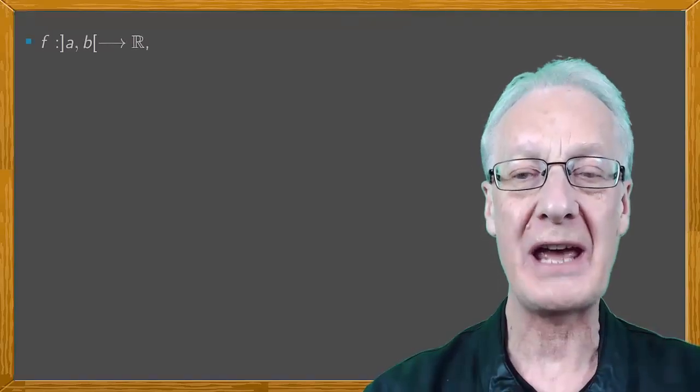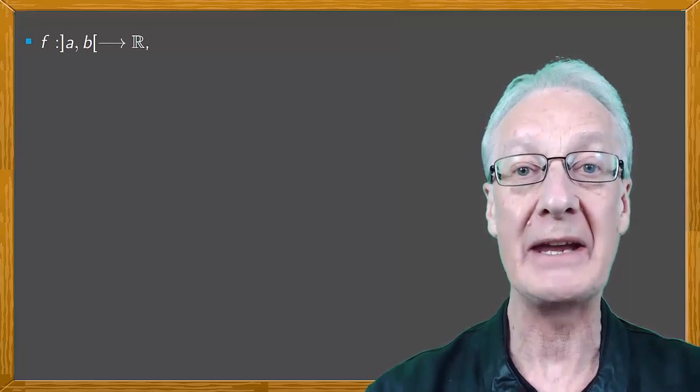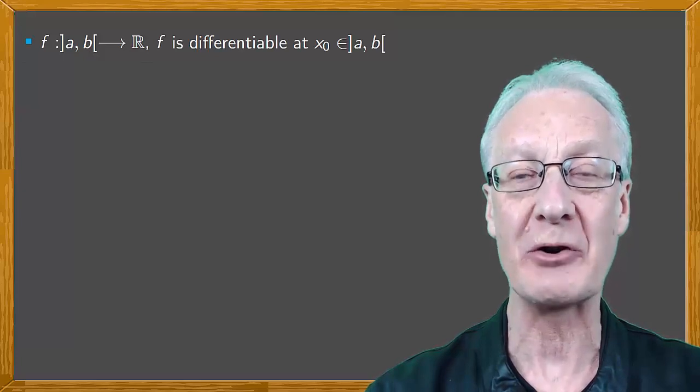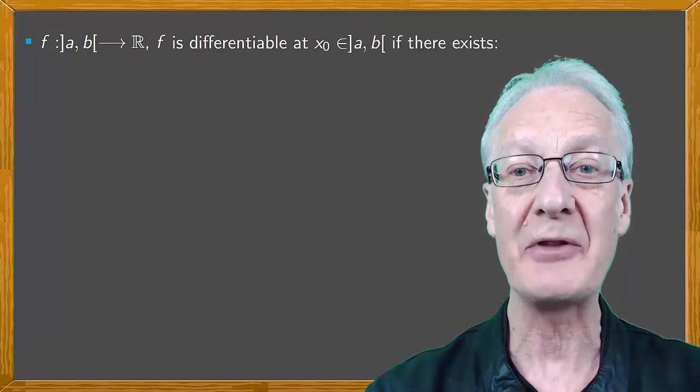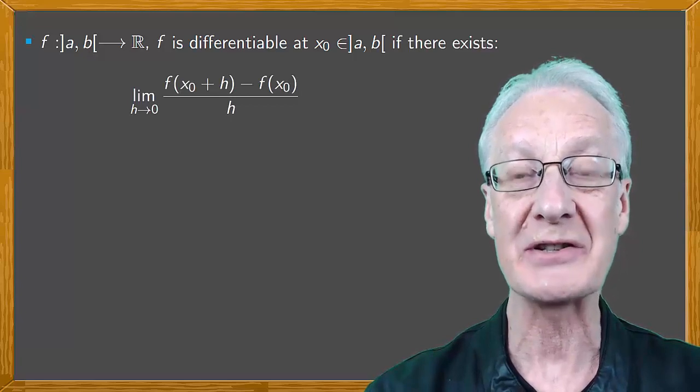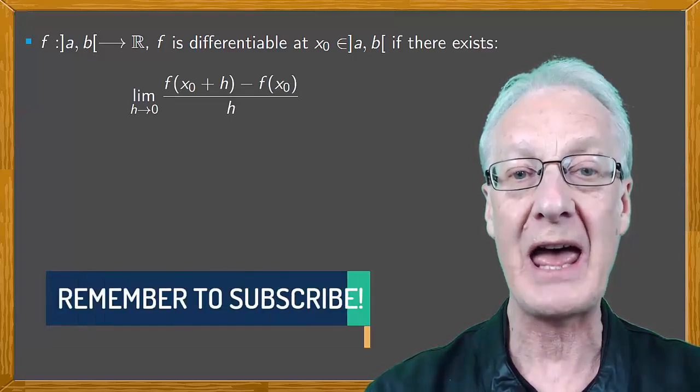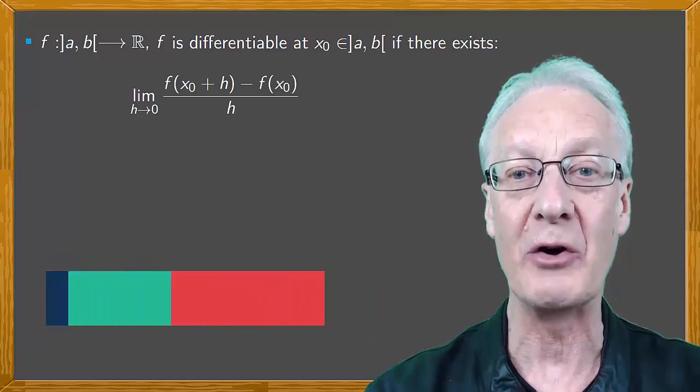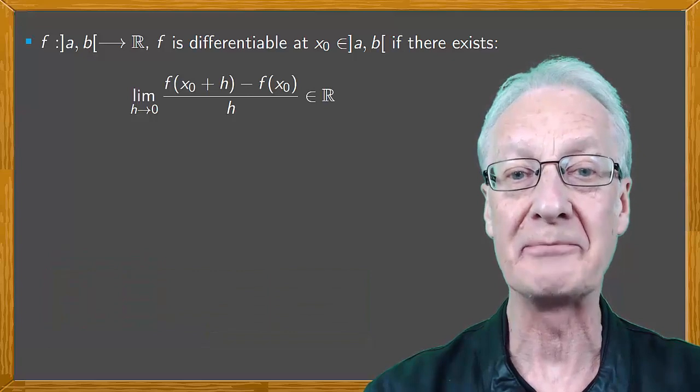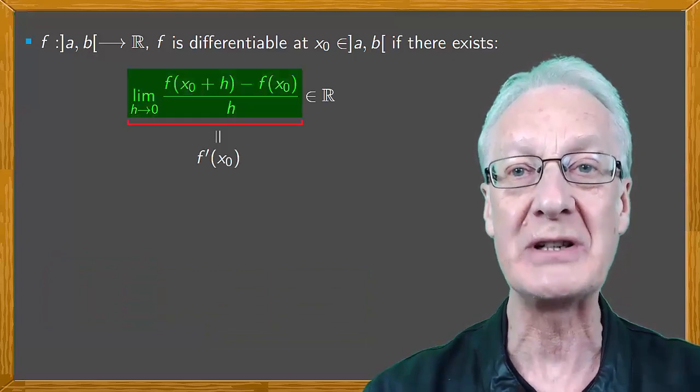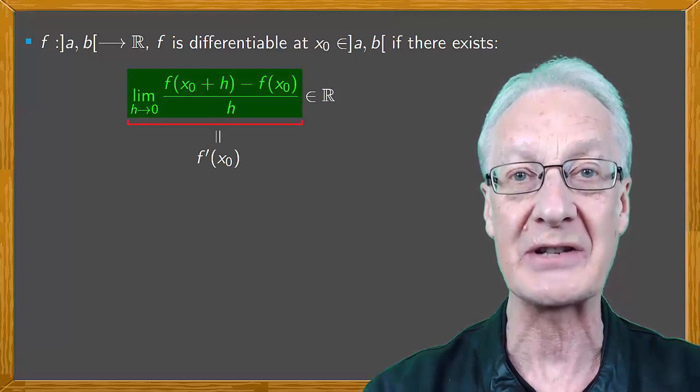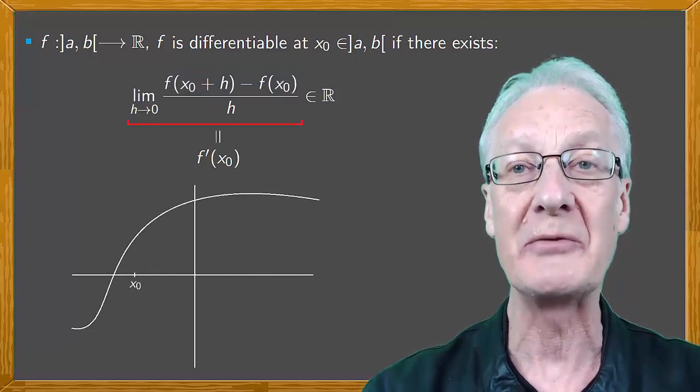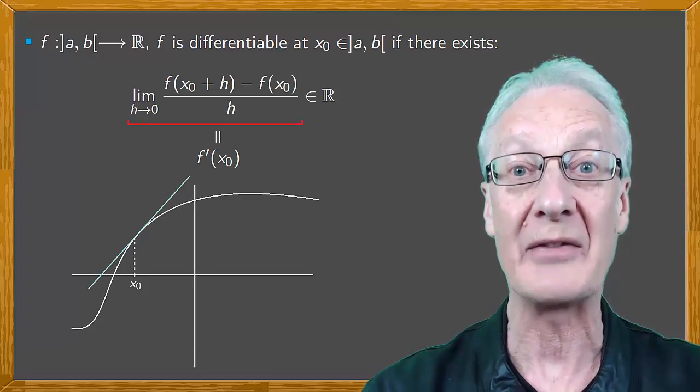If we consider a function f defined on open interval (a,b) in R, the set of real numbers, it's differentiable at a point x0 in that interval if there exists a limit as h tends to 0 of [f(x0 + h) - f(x0)]/h and it's a real number. We can say that this limit is the derivative of f at x0. Now as you know the derivative at a point is the slope of the tangent to the graph of the function at that point.